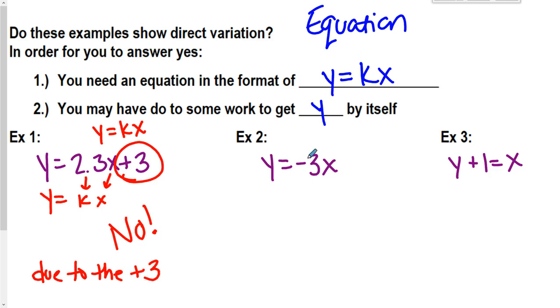Alright, example two. So I have a y equals, I have a k, and I have an x. There's nothing else after it. So I can look at it and say, alright, well, k is equal to negative three. So yes, this is direct variation. I don't have anything added or subtracted at the end. It's just y equals my k value times x.